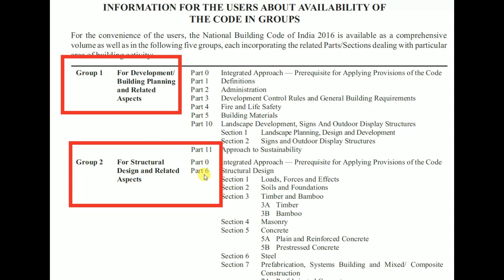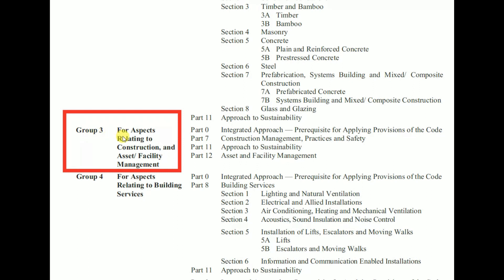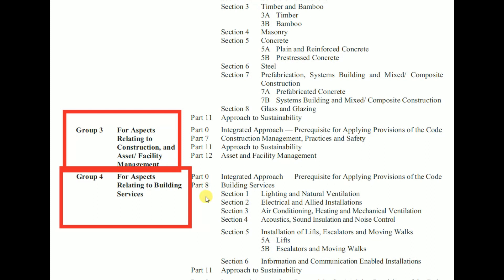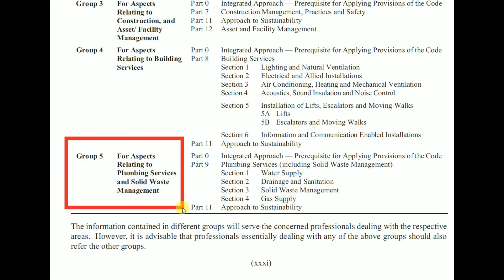Group 3 covers aspects relating to construction and asset or facility management — it includes Parts 0, 7, 11, and 12. Group 4 covers aspects relating to building services — it includes Parts 0, 8, and 11. Group 5 covers aspects relating to plumbing services and solid waste management — it includes Parts 0, 9, and 11. In this way, the National Building Code of India has been subdivided into five groups.